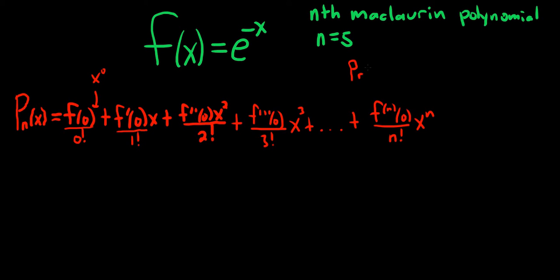So basically, p sub n of x is approximately equal to f of x when x is close to 0. So in this problem, we just have to find the fifth one. So we have to go to the fifth derivative. So I like to do this in steps. First, let's find the derivatives, and then we'll plug in the numbers.